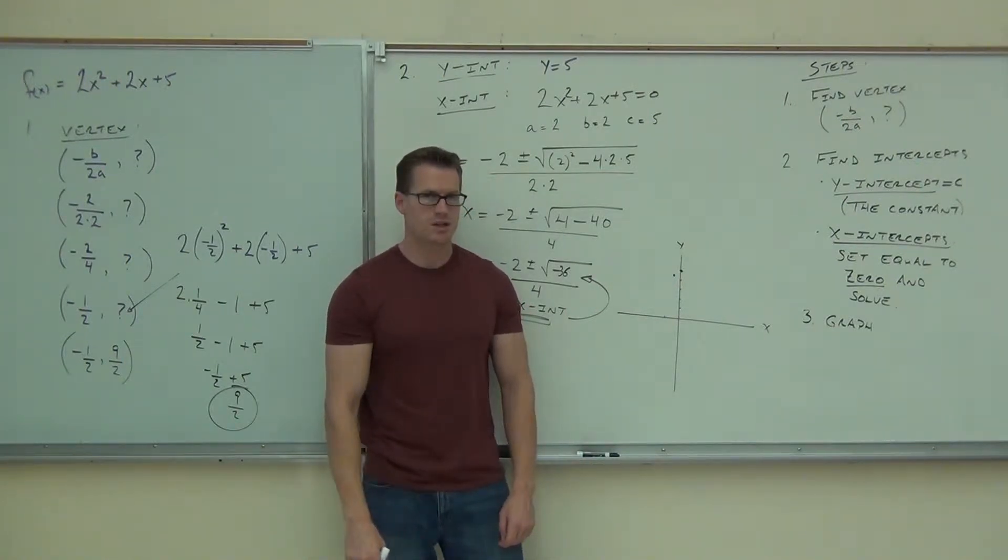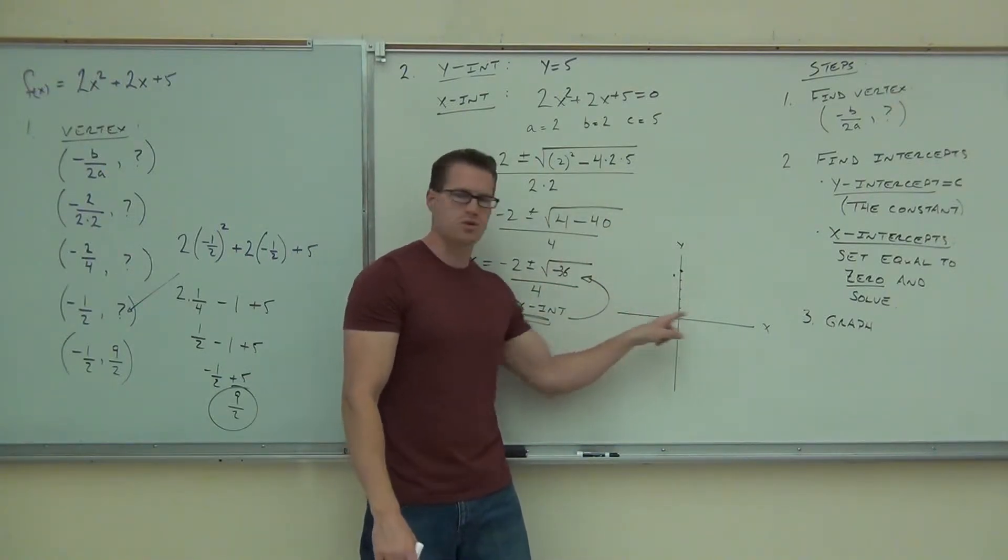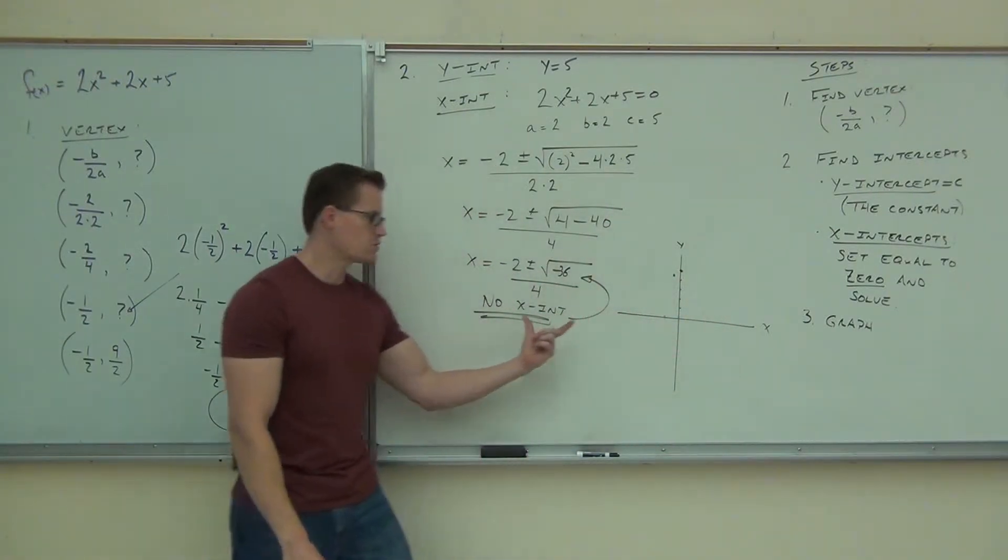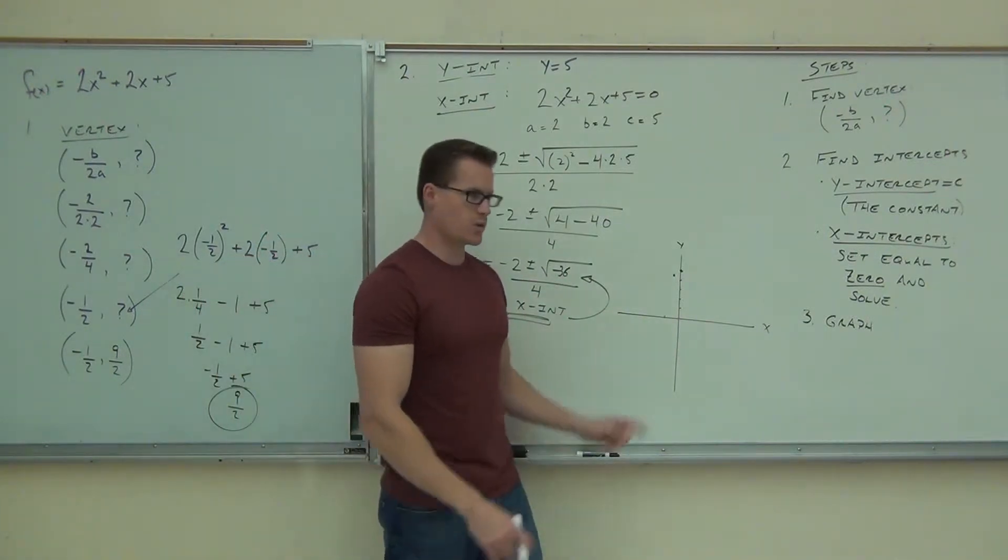Is this going to have any x-intercepts? Look, this is the vertex and it's going upwards. Can it possibly cross this axis? That's why you couldn't find anything here. It didn't exist in real numbers.